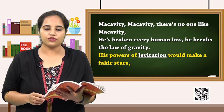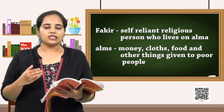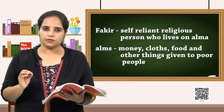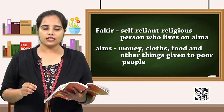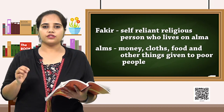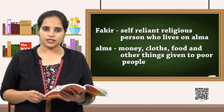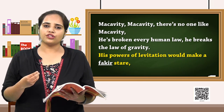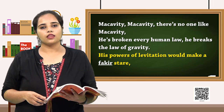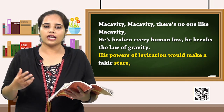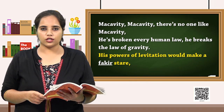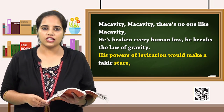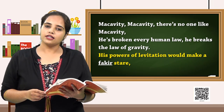Who is a fakir? A fakir is a self-reliant, religious person who lives on alms. When you say that a person is so religiously self-reliant, that person is able to handle everything without any worldly pleasures or astonishment. But here, Macavity's powers — specially of levitation — are very astounding even to the fakir himself.